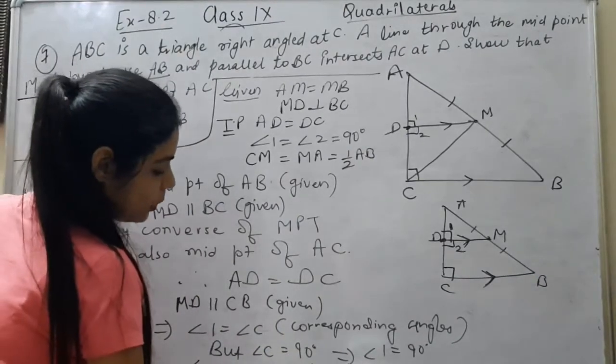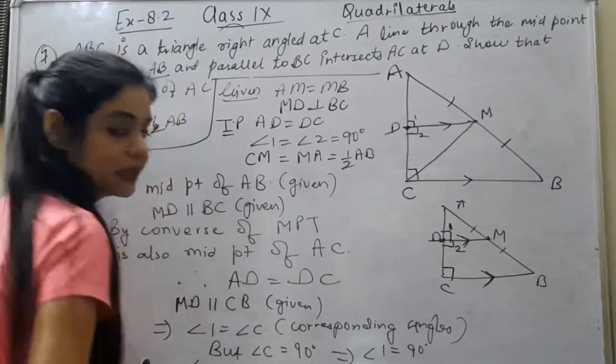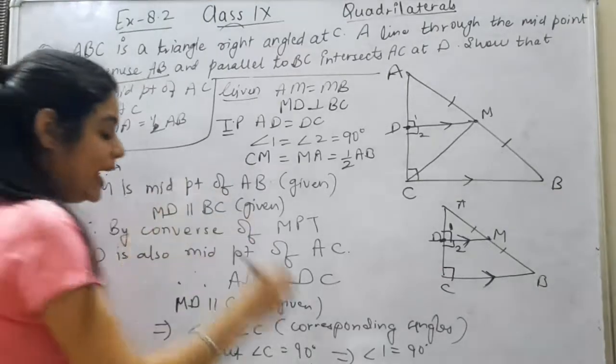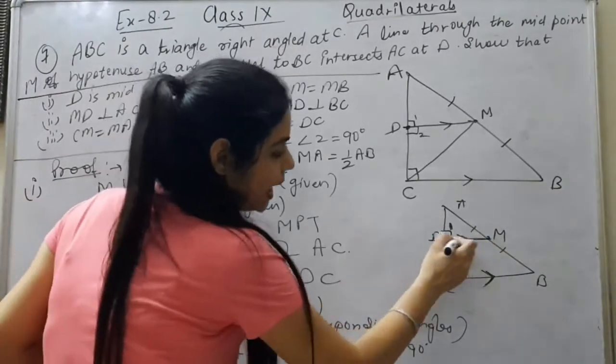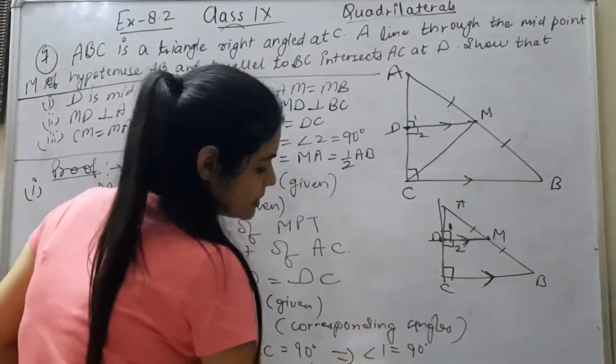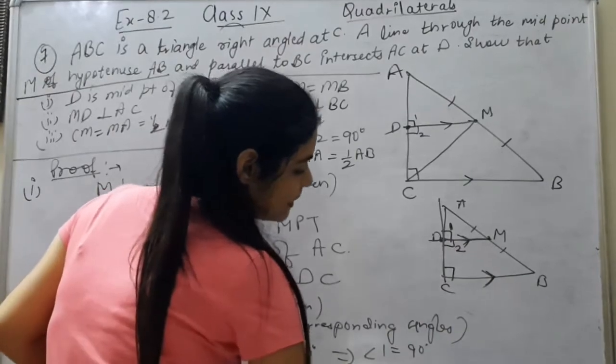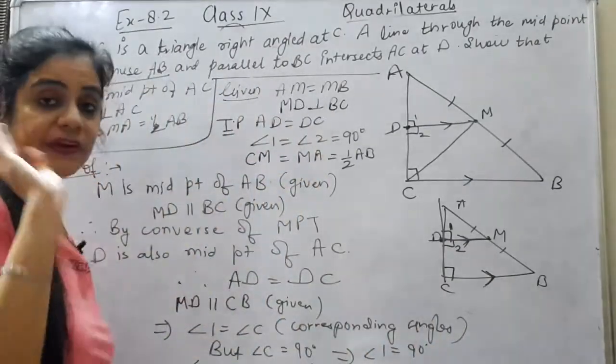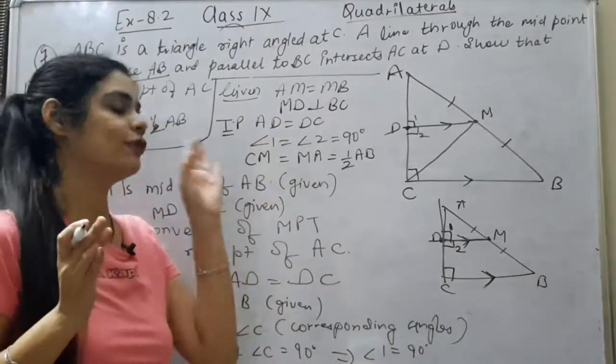So what is angle 2? Also 90. Therefore this means MD is perpendicular to AC. That means I have proved the second part. What is left? Only the third part.